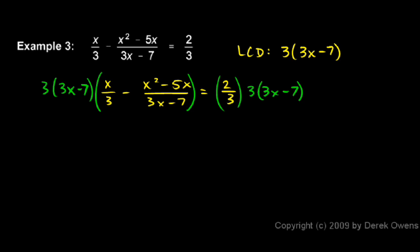And that's the whole point of finding the least common denominator, because multiplying by that makes a lot of stuff cancel. So you should be able to see that when I multiply this by that, the 3's will cancel. So those 3's will cancel, and I'm left with my x multiplied by 3x minus 7. So I'll write it like that. x times 3x minus 7.